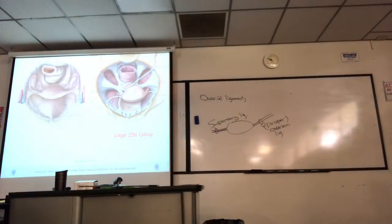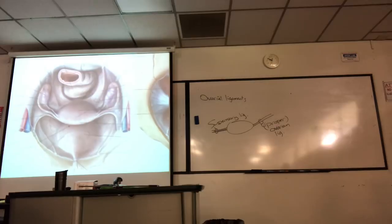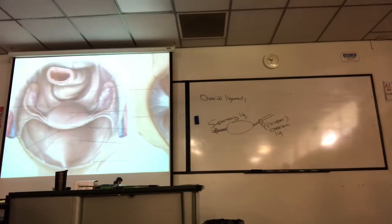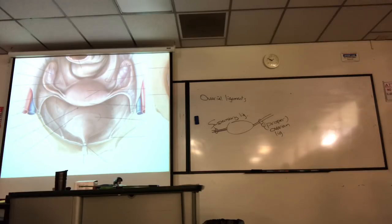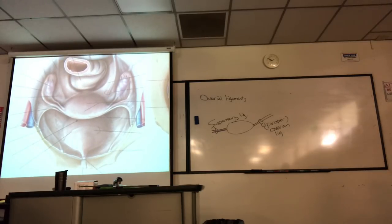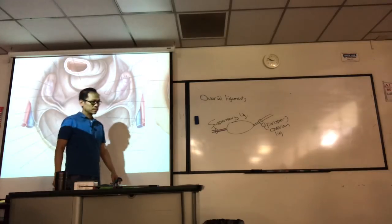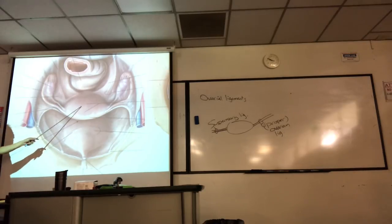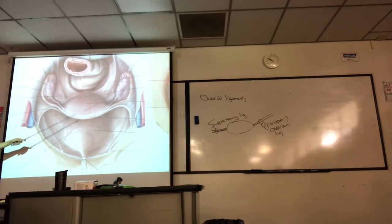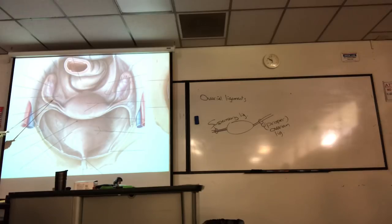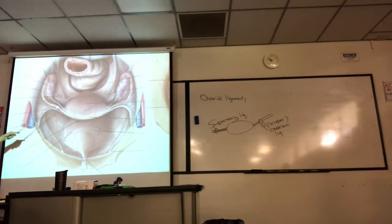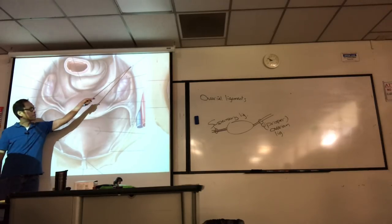If we turn out the lights, here's a superior view. In the middle is the uterus. The pouch in front between it and the bladder is the vesico-uterine pouch; the space behind it is the recto-uterine pouch. Here is the proper ovarian ligament, the ovary, and the uterine tube associated with it. That ligament there is the suspensory ligament, and there is the proper ovarian ligament.